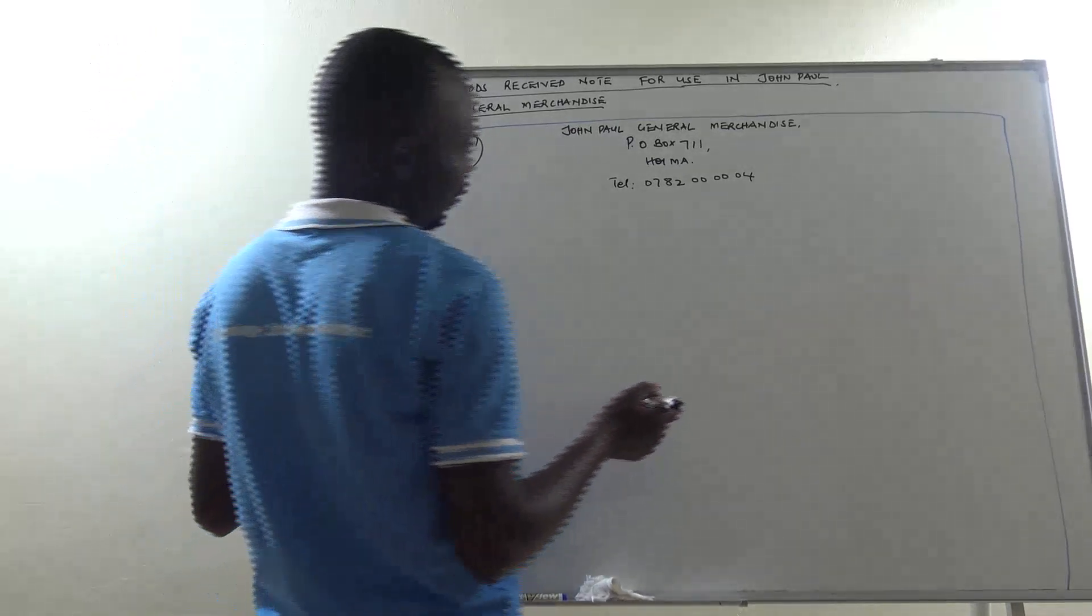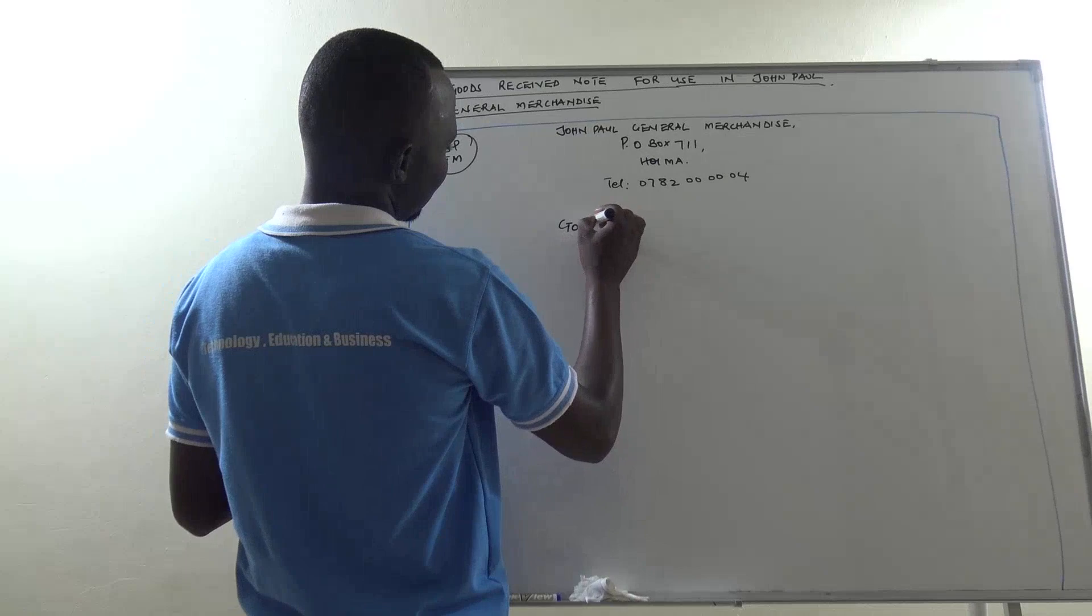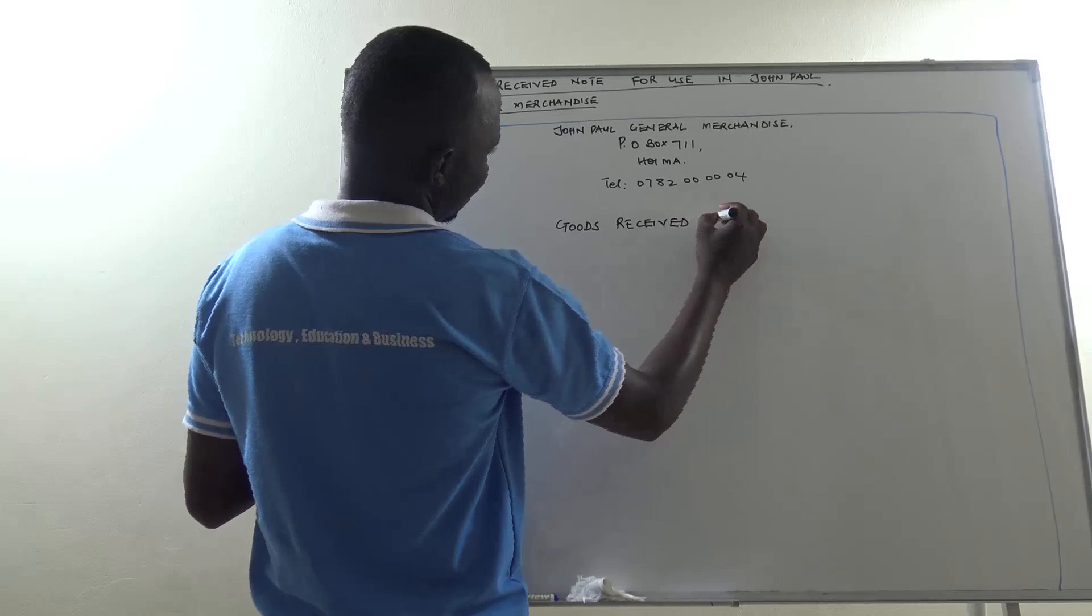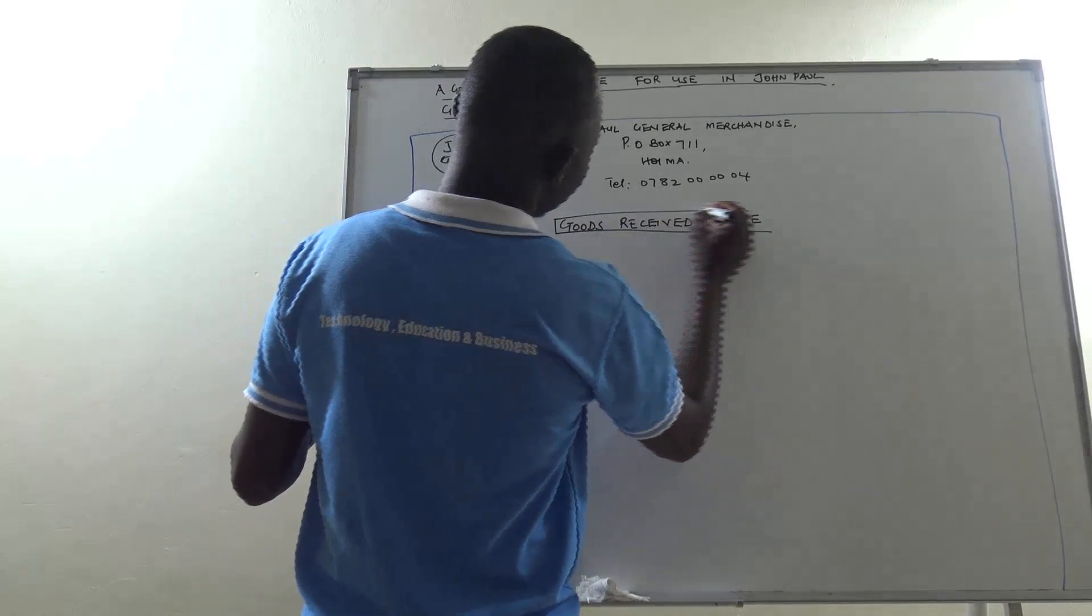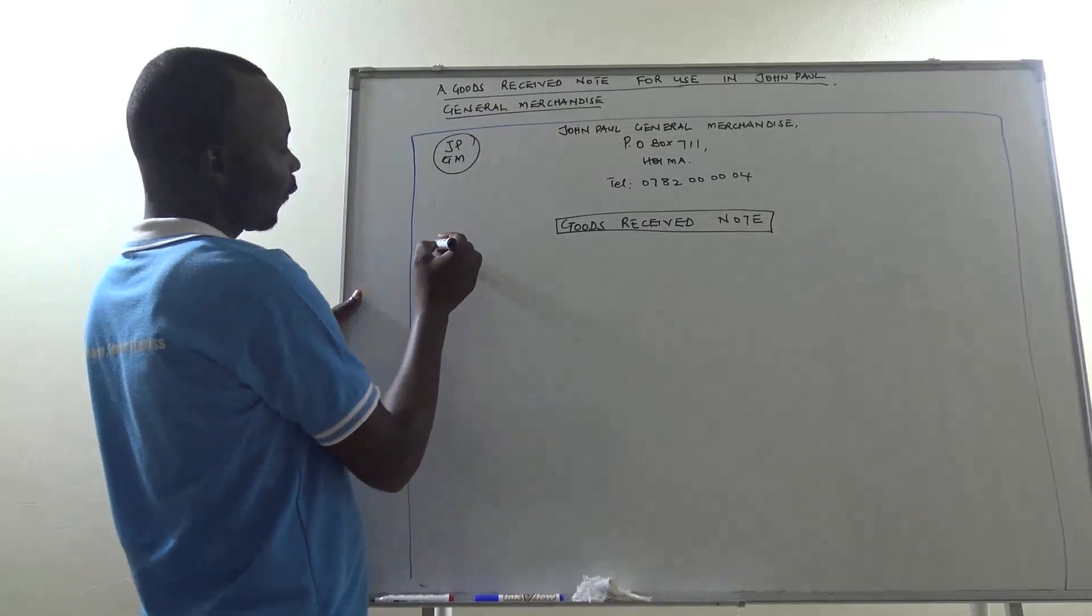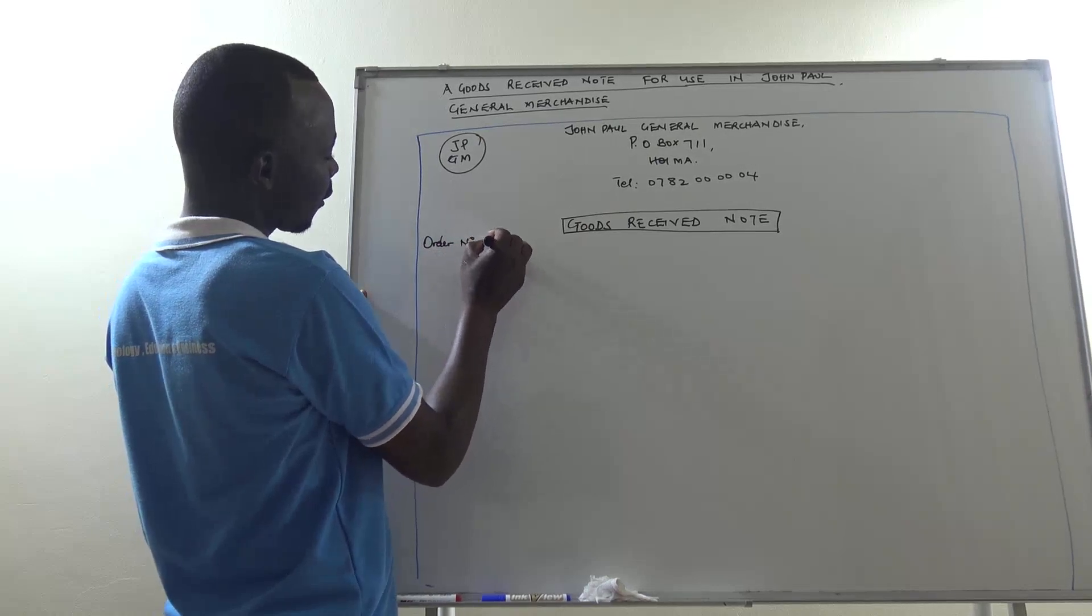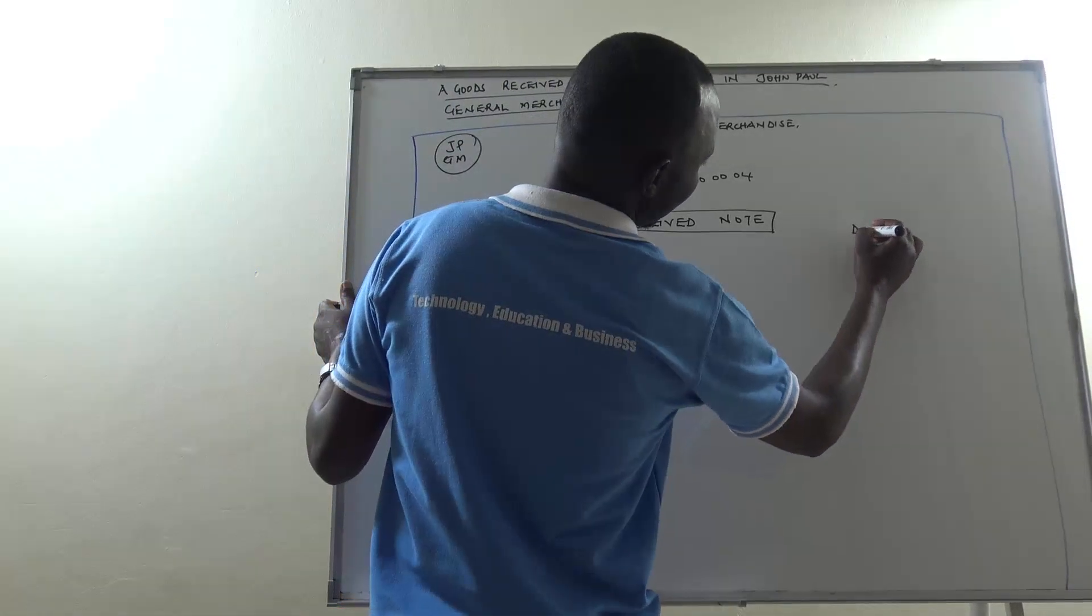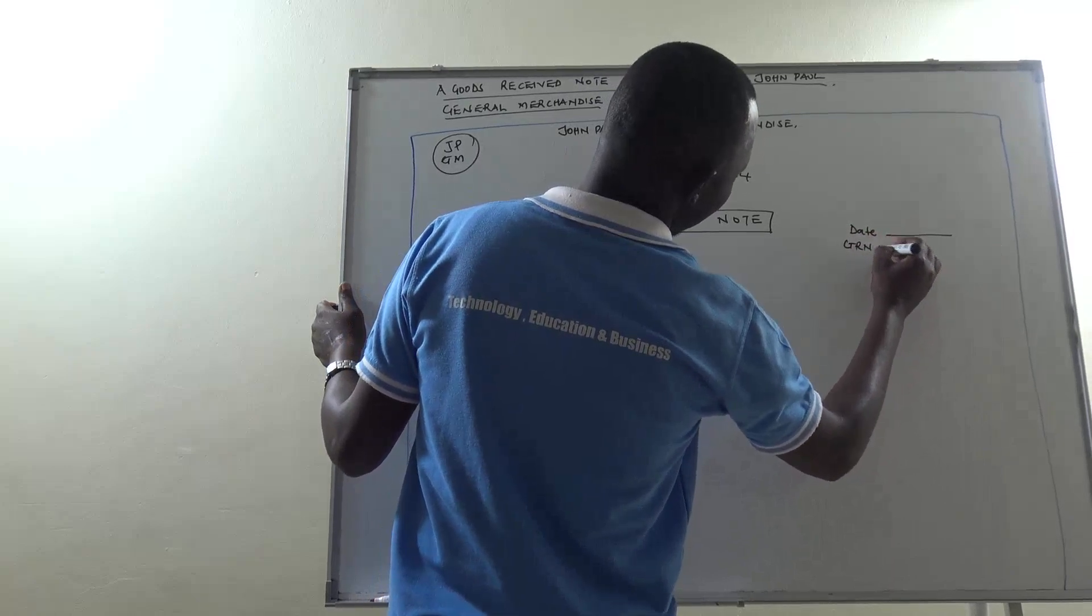And we say another component is the name of this document. Put it in this table. After that, don't forget the order number. Assuming it is that. Don't forget the date. Don't forget the goods received note number.